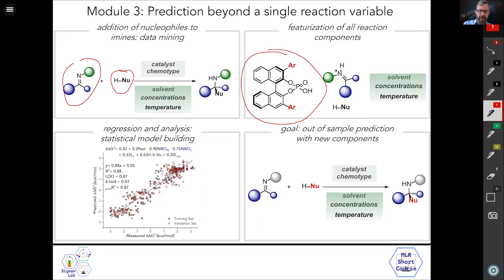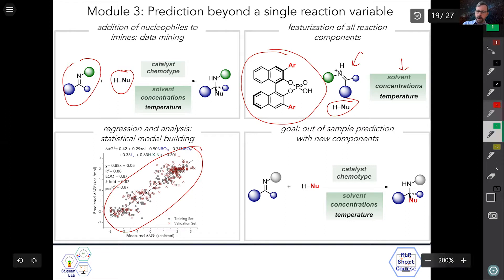We then took all of the reaction components and featurized them—that would be the solvents, the imines, the nucleophiles—and built a regression model that I'll speak about in more detail. Now the ultimate goal is twofold. One of them is to do what is called out-of-sample prediction, and that would be: could we take unique examples of phosphoric acids, unique examples of imines, and unique examples of nucleophiles and mash them to the right conditions and predict the reaction outcome?